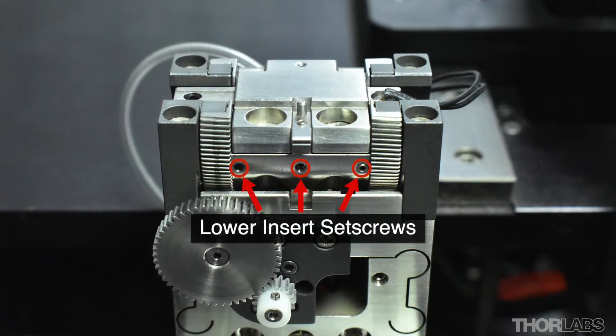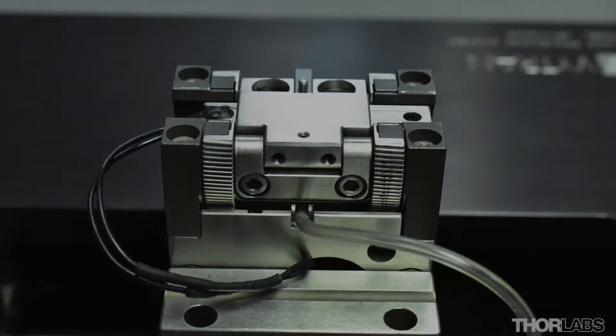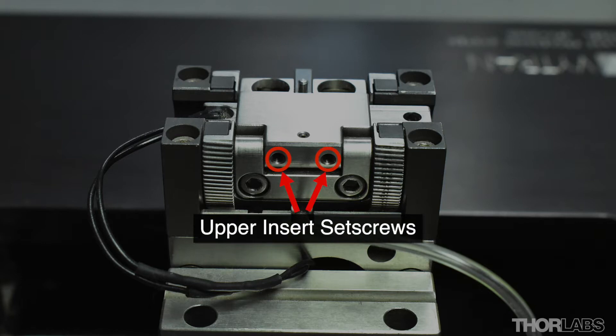The lower insert is held in place with three set screws on the front of the fiber holding block. The upper insert is held in place with two set screws on the back of the fiber holding block lid.